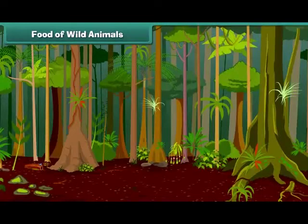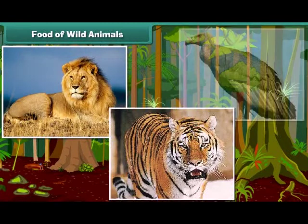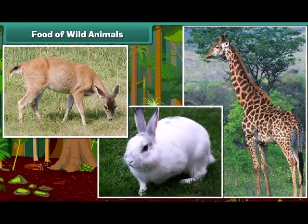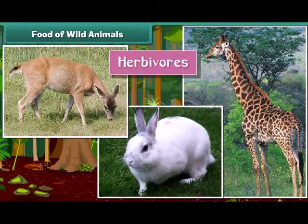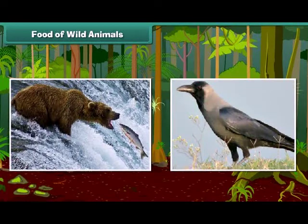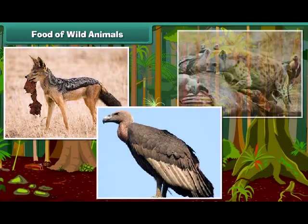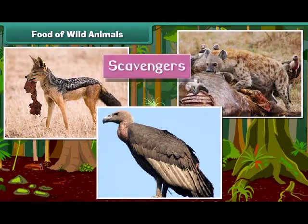Let us look at what wild animals eat for food. Lions, tigers, and vultures are carnivorous animals — they eat the flesh of other small animals. Deer, giraffes, and rabbits are herbivorous animals as they eat only plants. Animals like bear and crow are called omnivorous animals as they eat both plants and animals. Jackals, vultures, and hyenas are called scavengers — they eat the flesh of dead animals.